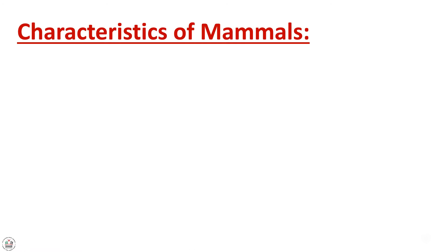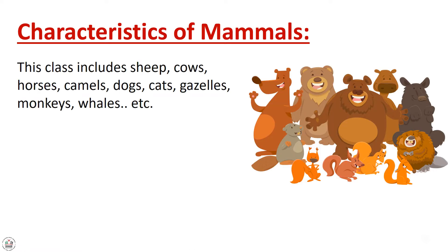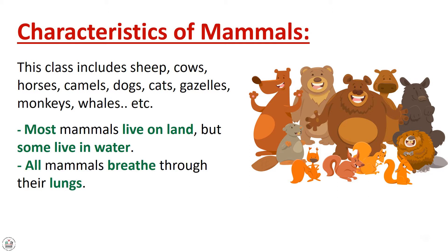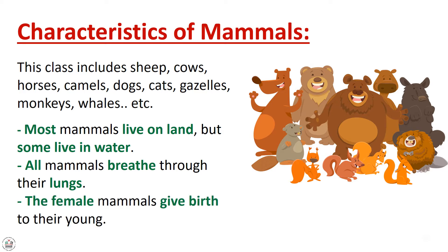Characteristics of mammals: this class includes sheep, cows, horses, camels, dogs, cats, gazelles, monkeys, whales, etc. Most mammals live on land, but some live in water. All mammals breathe through their lungs, and female mammals give birth to their young.